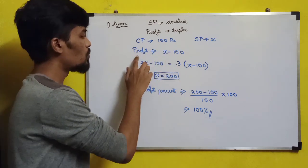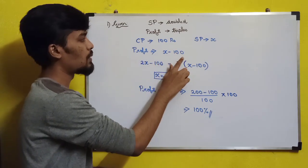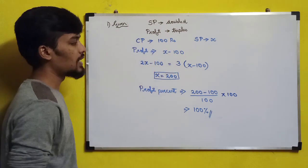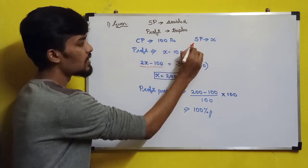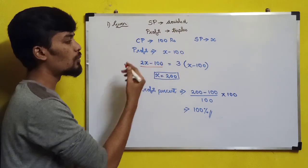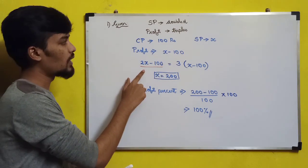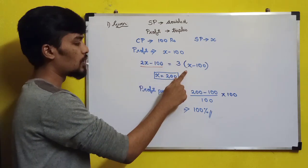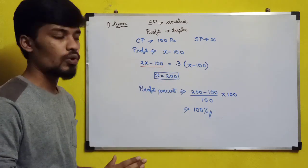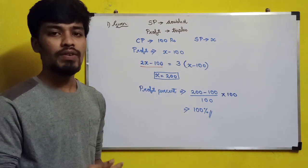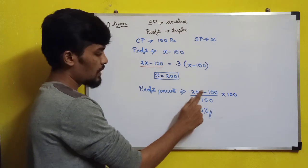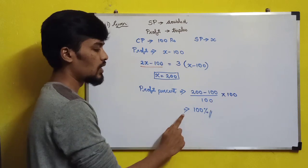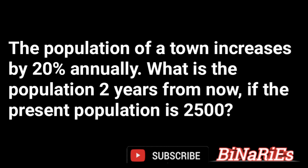Let's check with a value of 100. Let the cost price be 100. So selling price will become 200 when doubled. We have new profit as 2x minus 100. Since profit gets triple, we equate to find x. Profit percentage equals profit divided by cost price into 100, which is selling price minus cost price divided by cost price into 100. So 200 minus 100 divided by 100 into 100 — final answer is 100 percent.